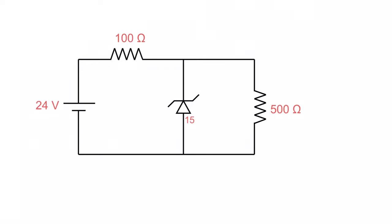So in this case I've got a 24 volt source, I've got a 100 ohm current limiting resistor there, I've got a 500 ohm load, and I've got a Zener that has a breakthrough voltage of 15 volts.